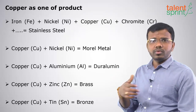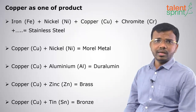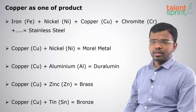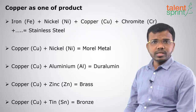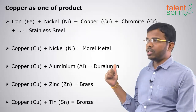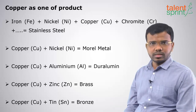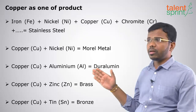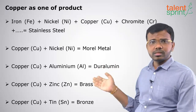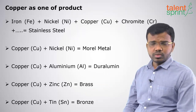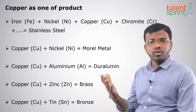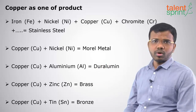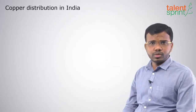Stainless steel alloys are made primarily for corrosion resistance. When copper is mixed with nickel, we get monel metal. When copper is mixed with aluminium, we get duralumin. When copper is mixed with zinc, it is called brass. And copper mixed with tin is called bronze. This is very important: copper + zinc = brass, copper + tin = bronze.